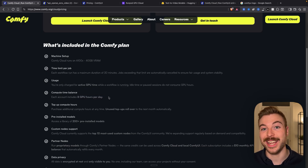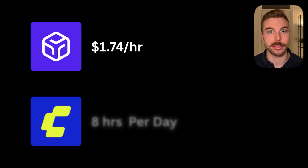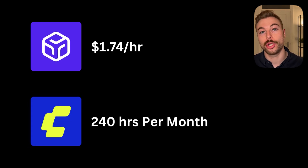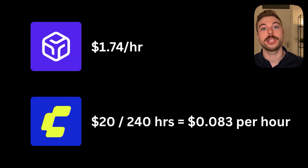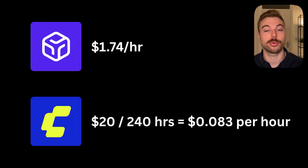We can use ComfyUI for at least eight hours per day to generate AI videos and images. If we've got eight hours per day and 30 days in a month, that's 240 hours per month. So if we do $20 divided by the 240 hours we can use it for, that gives us a cost of $0.083 per hour to use ComfyUI.